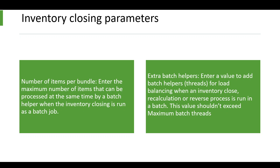You might wonder what the optimal bundle size is, but there is no single optimal bundle size — it should be configured separately for every environment. When configuring extra batch helpers, think about the available threads in your environment. For the number of items per bundle, consider both the number of items you have and the volume of inventory transactions. For example, if you have many items but low inventory transaction volume, you can increase the number of items per bundle. If you observe a specific bundle taking significant time to complete, it makes sense to decrease the number of items per bundle.